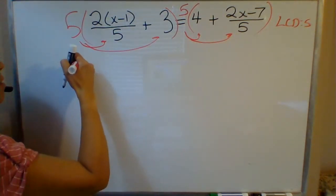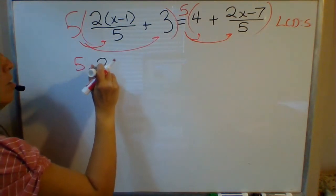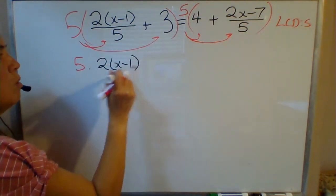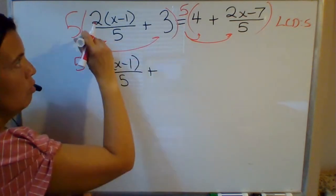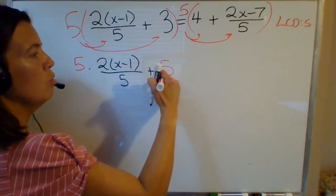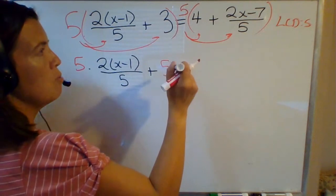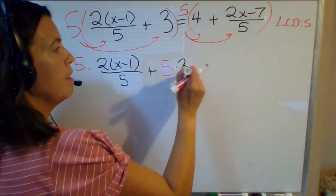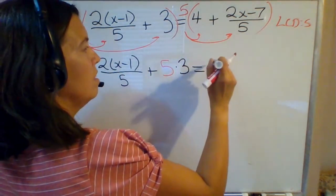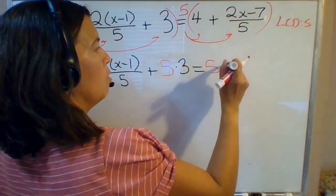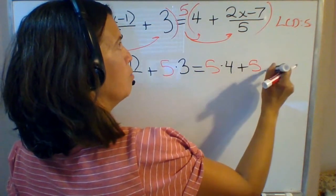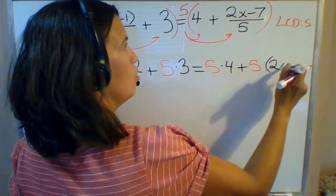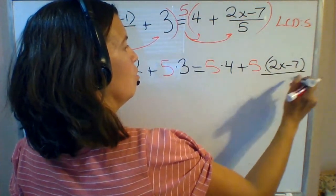So this will be 5 times 2x minus 1 over 5 plus - here's where you can't pick and choose - if we're going to multiply both sides by 5 I need to multiply everything by 5. So 5 times 3 and then 5 times 4 plus 5 times 2x minus 7 over 5.